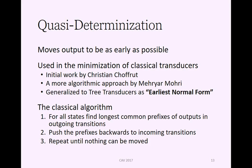What we need is quasi-determinization which moves output to be as early as possible. This is a transformation that's used in the minimization of classical transducers where the initial work was done by Christian Schofruth. Meri Armoori presented a more algorithmic approach. This has also been generalized to tree transducers under the name of earliest normal form, which is a more descriptive name in this context.